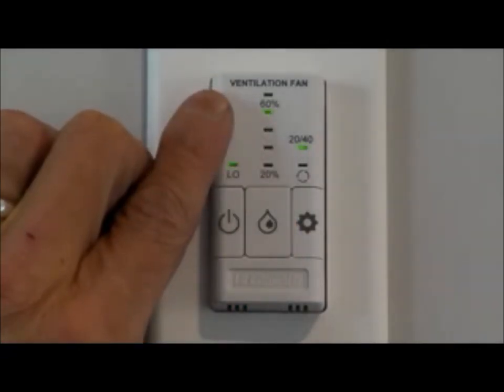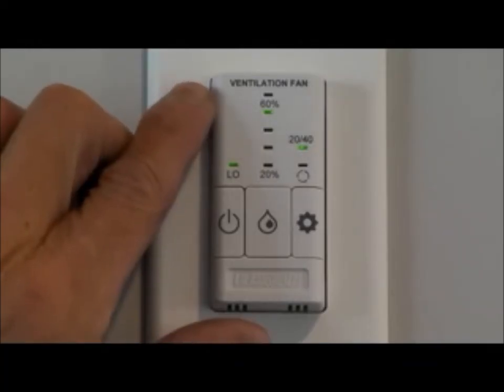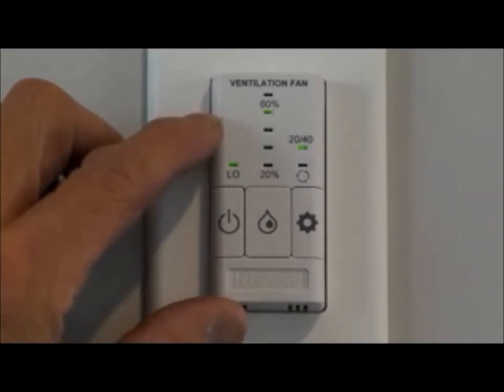Anytime you see this indicator begin to blink, that means the HRV has been activated because we've reached that threshold of 60% humidity. It is now trying to introduce the drier, cooler air of the winter months to bring that humidity down to a relative setting between 50 and 40.